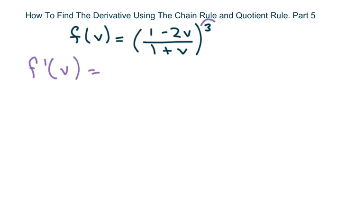The first thing we're going to do is use the chain rule. We take the derivative and bring this 3 out front here. We have 1 minus 2V over 1 plus V, and 3 minus 1 is 2. So that's your outer function part.